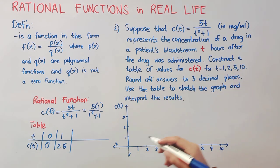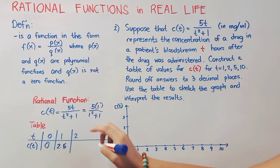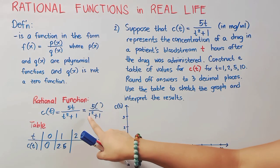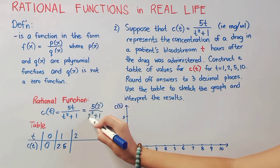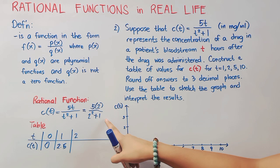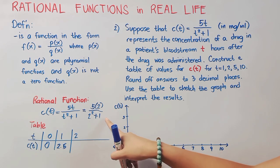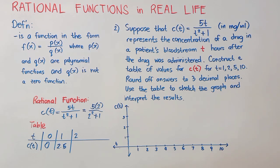Next, let's have t equals 2. In that case, we will replace all values of t with 2. So, in our numerator, we have 5 times 2 equals 10, and then that is 2 squared, so 4 plus 1, 5. So, 10 divided by 5 is 2.